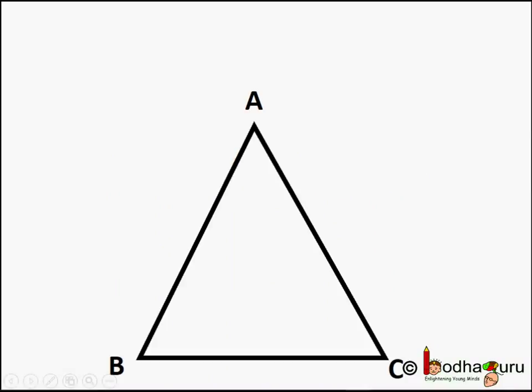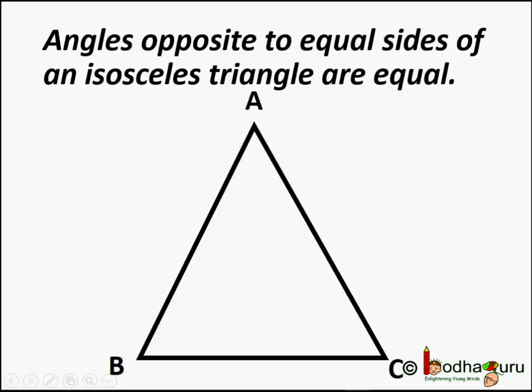Hello friends! Angles opposite to the equal sides of an isosceles triangle are equal. Very often we use this property in geometry.